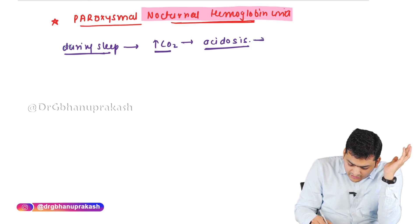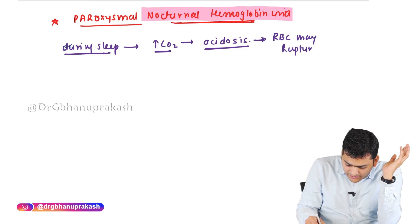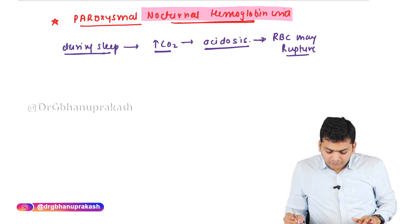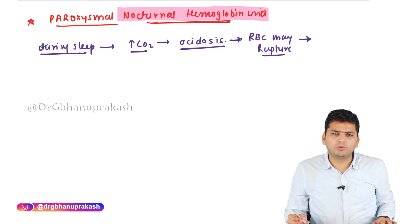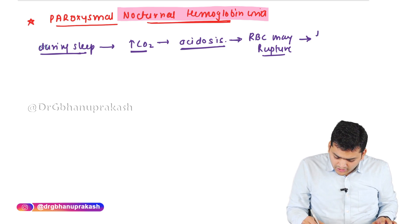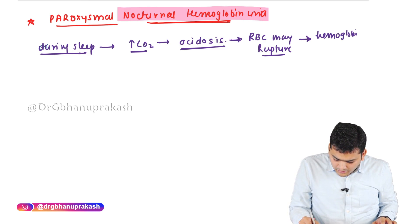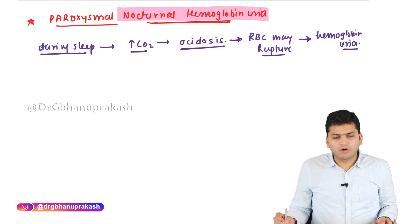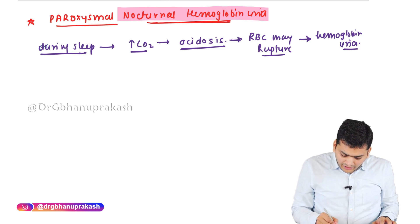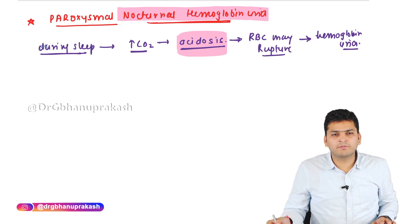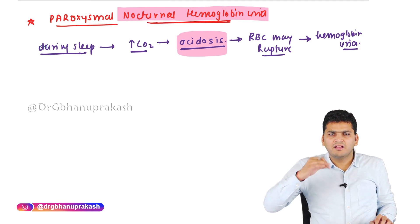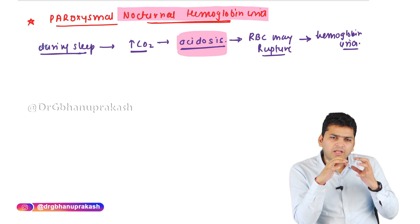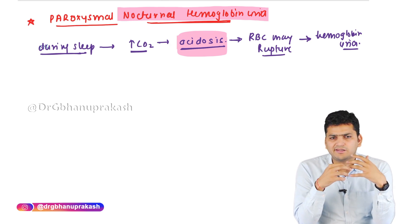Because of this acidosis, the RBCs may undergo hemolysis. If the RBC ruptures, the next day morning when the person wakes up, they will have hemoglobinuria — red-colored urine. However, not everyone experiences hemoglobinuria in the morning because our RBCs have a protective mechanism that protects them during the phase of acidosis.